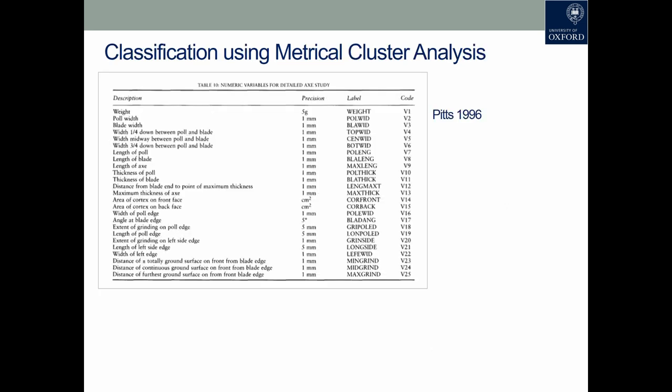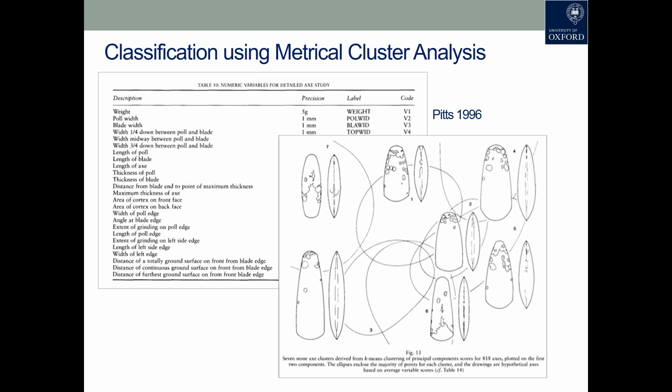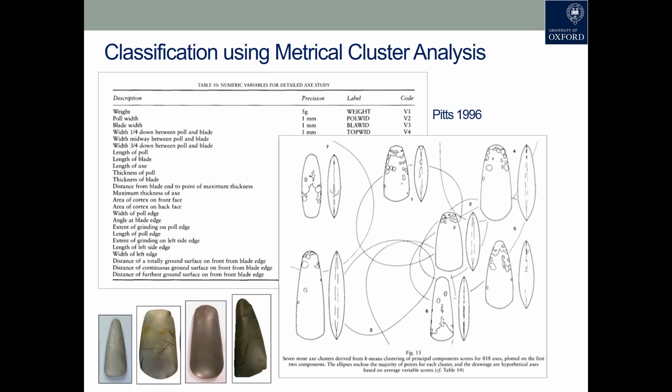There have been previous exercises classifying axes using multivariate analysis. One from 1996 used 25 variables, mostly metrics taken from the artifacts themselves with very limited focus on shape — only one variable, the angle of the blade, accounts for shape. It was a dataset of over 800 axes, and by K-means clustering analysis, seven clusters were identified. The drawn examples from the study represent the idealised standard shape from each cluster, and comparing them with the artifacts themselves, you can see some similarities and parallels.